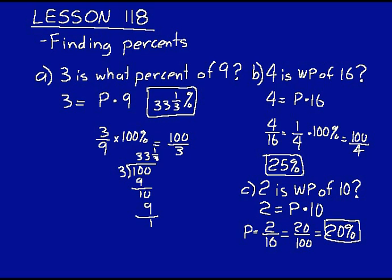So when you see these problems where you're finding the percent, look for keywords. 'Is' means equals. 'Of' means multiplication in these kinds of problems. And just go ahead and rewrite it as a problem like a missing number problem. Solve for that missing number and remember you're trying to find a percent. So you have to multiply that answer by 100%.